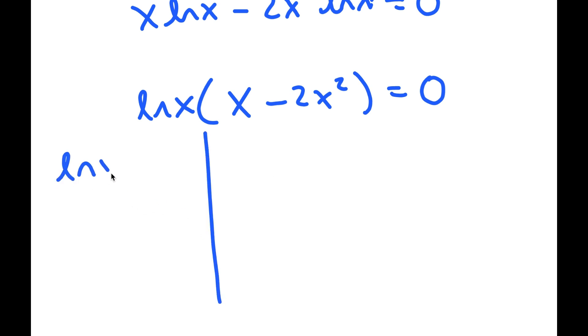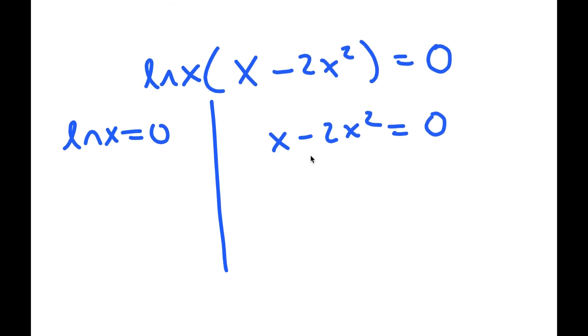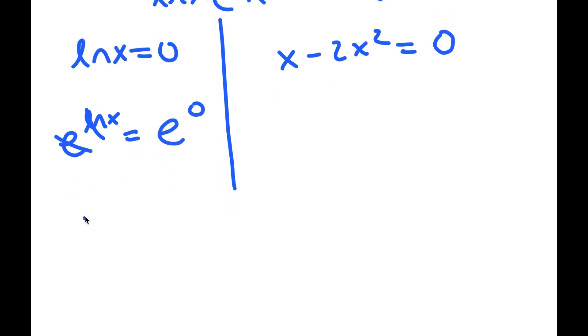So this gives me two equations. I have ln x equals 0 and x minus 2x squared equals 0. For ln x equals 0, I'm going to take e to the power of both sides. So these two cancel out and I get x is equal to e to the power of 0, which is 1.